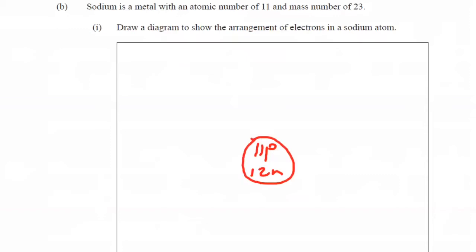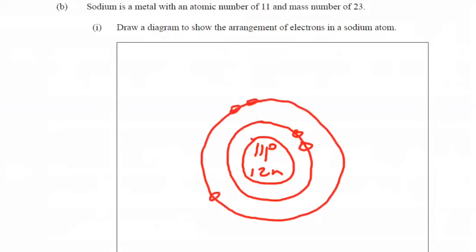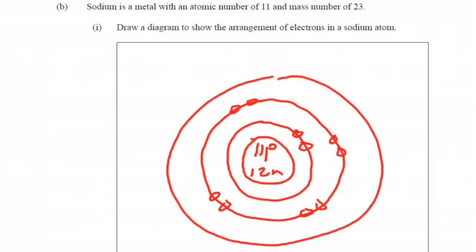And we're going to be putting our 11 electrons. Two on the first shell. Eight on the second shell. Eight plus 2 is 10. The 11th one on the third shell. Two, eight, one.